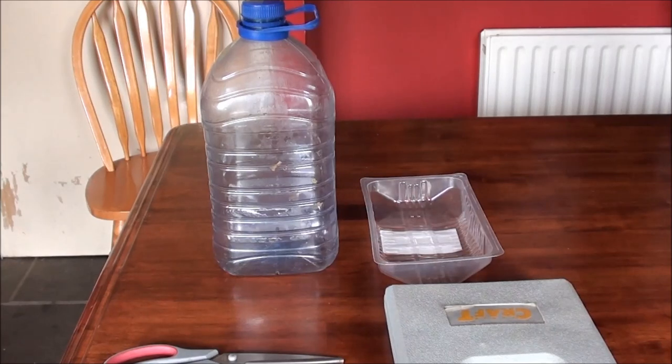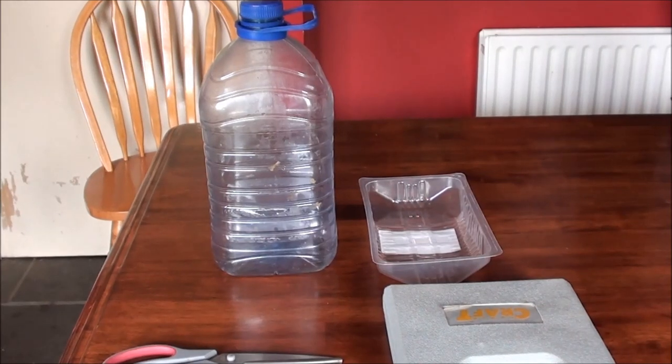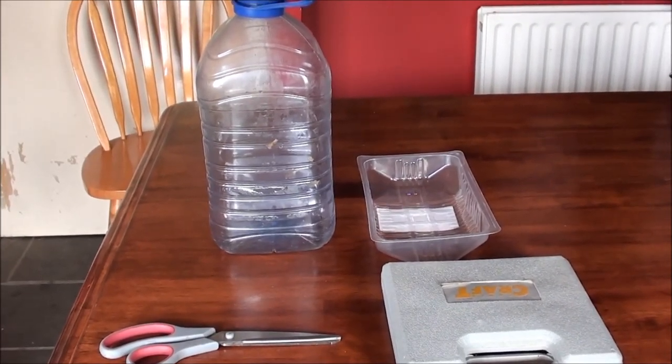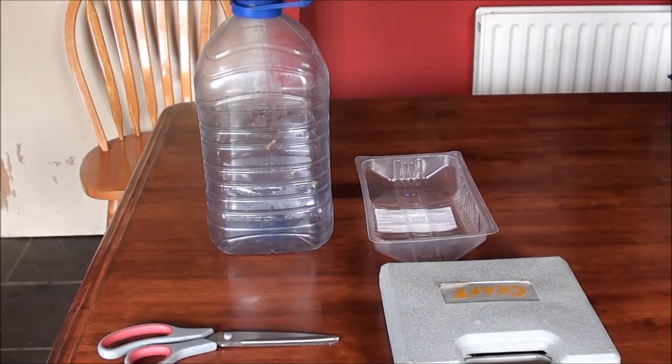We're making a recycled bird feeder here. We have a 5 liter water bottle, a Dunn-Stars burger pack, hot glue gun, and scissors. These are the four things you'll need.